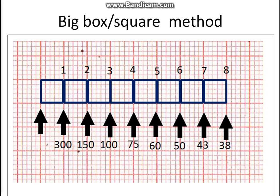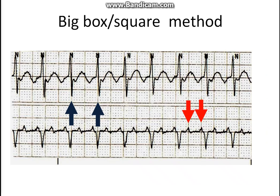The big box method. The rate is computed by the R to R interval for ventricular rate or P to P interval for the atrial rate, based on the big boxes it will fit. A RR interval of one big box is equal to 300 beats per minute. A RR interval of two big boxes is equal to 150 beats per minute and down the line. The R to R is highlighted with blue arrows and it is about two big boxes, and the red arrows highlight the atrial rate which is about one big box.